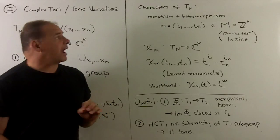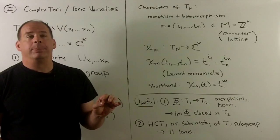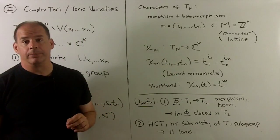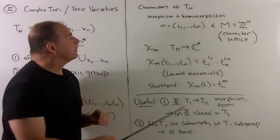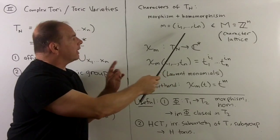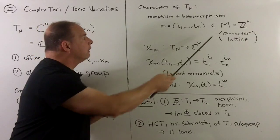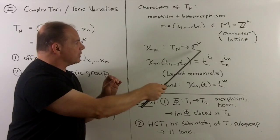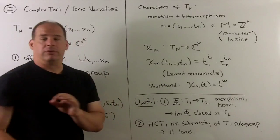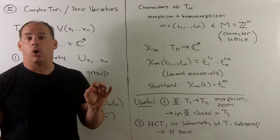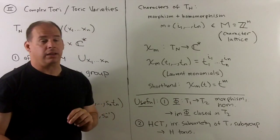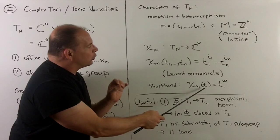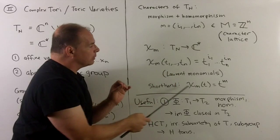Our next ingredient: we need characters on tori. Since we're in the algebraic category, a character is going to be both a morphism — defined using polynomials — and a homomorphism for the group property. To define characters, we take an n-tuple composed of integers, so it can have positive, zero, or negative values. The set of all these we call the character lattice, later identified by a capital M. These are a homomorphism into C-star; if you don't like characters in group theory, you can think of these as Laurent monomials — monomials with integer exponents including zero or negative. A useful shorthand: rather than writing out all the indices, we write T for a group element and raise to the m we're using for the tuple.